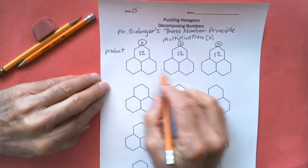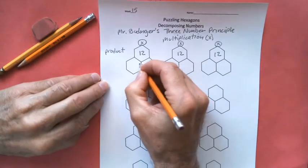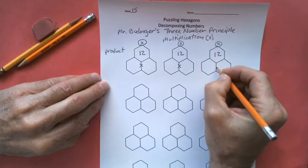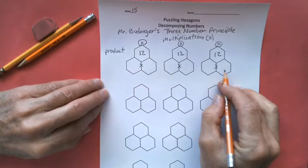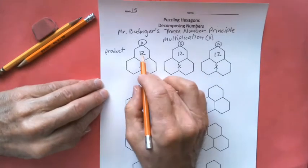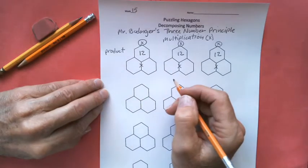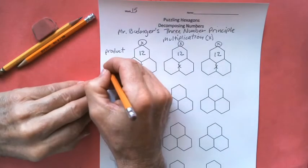And what do we call these numbers down here? We're going to multiply these numbers down here. The two numbers that we multiply to get the product? If you said factors, you're right.